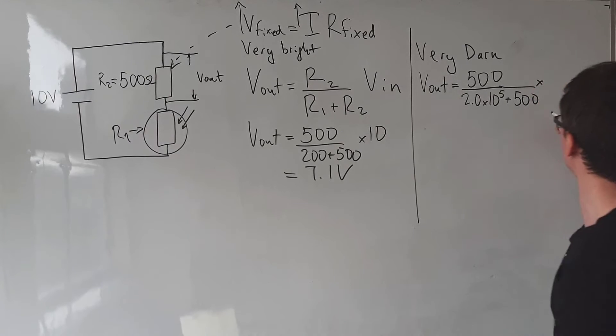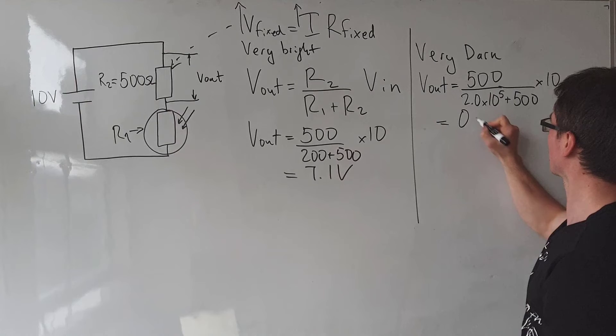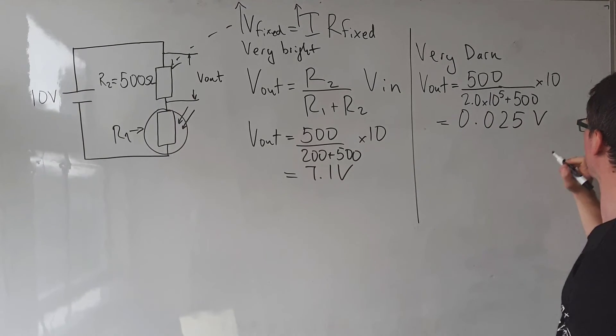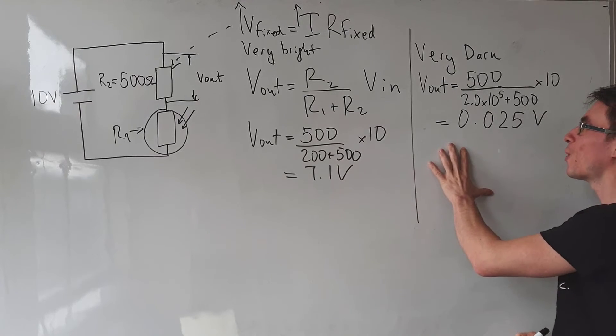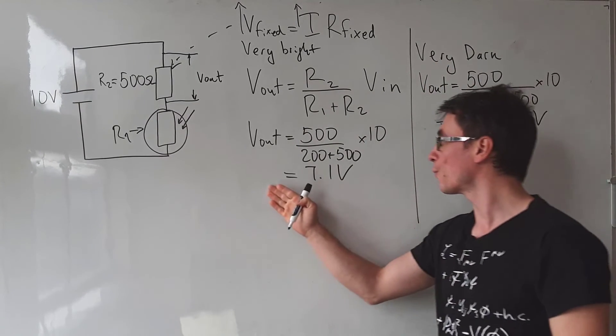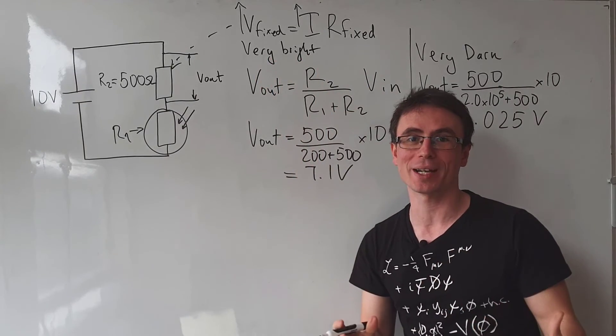Then multiply by the EMF, which is 10. If we put that into a calculator, we get a very tiny voltage around 0.025 volts, which is less than 1 volt in very dark conditions and over 5 volts in very bright conditions.